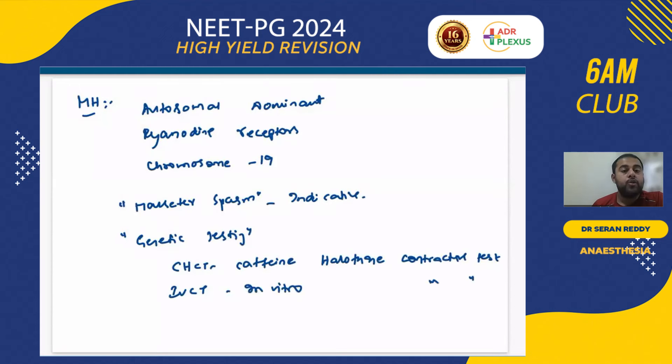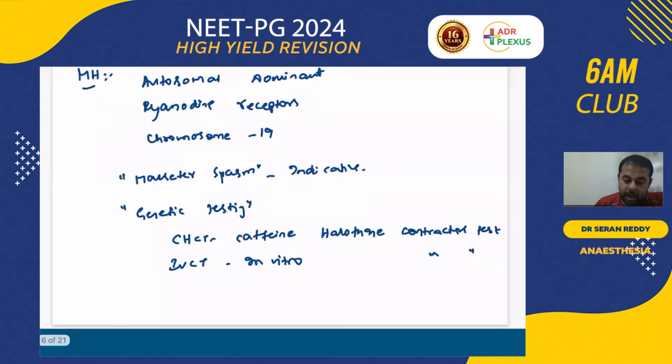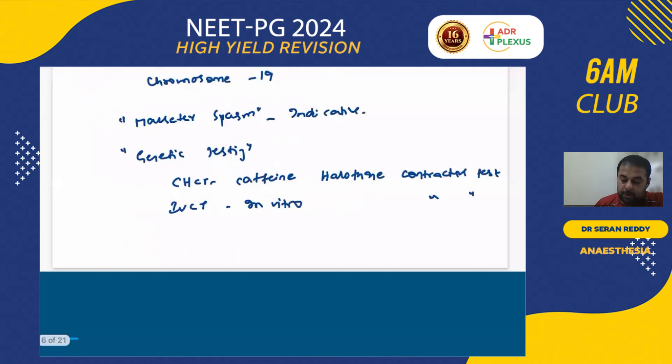Malignant hyperthermia is autosomal dominant, acts through ryanodine receptors, and is linked to chromosome 19. It can be identified early by masseter spasm. Diagnosis is by genetic testing, CHCT — caffeine halothane contracture test — or IVCT — in vitro contracture test.